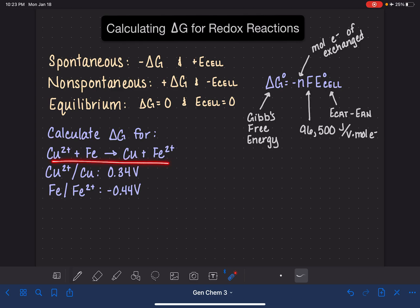And we have an example over here that we're going to use to practice using this delta G equals NF E cell equation. We're going to calculate the delta G for this particular redox reaction, copper ions plus iron atoms being converted to copper atoms and iron 2+ ions. Because we're going to need to be calculating E cell to solve this problem, I have the reduction potentials already written down. I looked up on a table of standard reduction potentials.